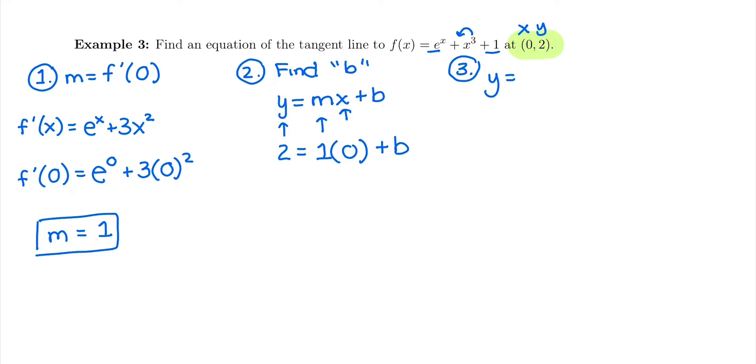So we have 2 equals, I need to multiply these together first, 0 plus b. There's nothing to move over, so we just get b equals 2.